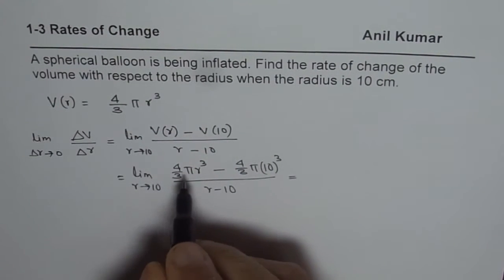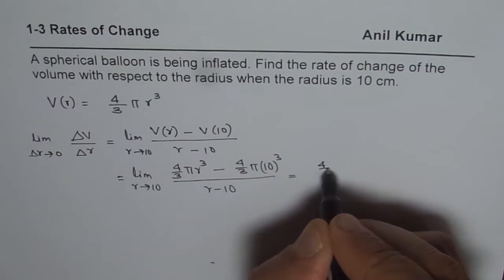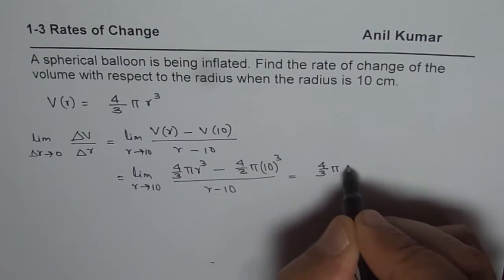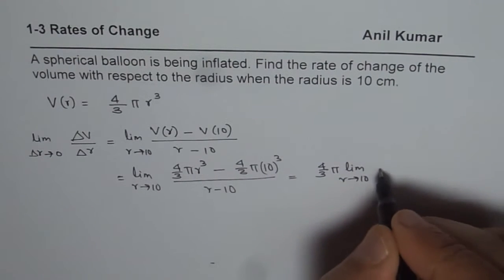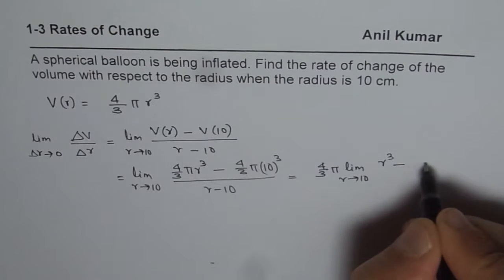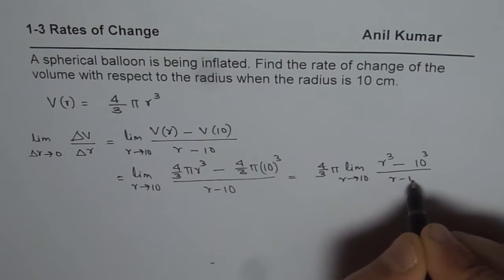Now we can take, so we have 4 by 3 pi limit r approaches 10 of r cube minus 10 cube over r minus 10.